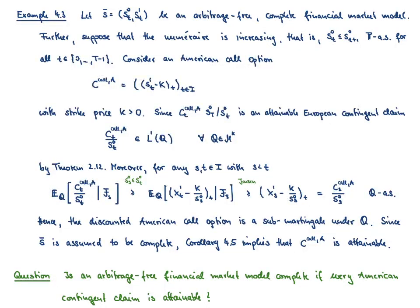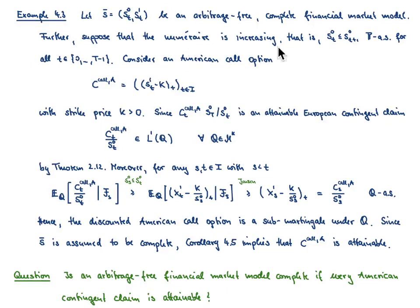I would like to present an example where the discounted American contingent claim is indeed a sub-martingale. For simplicity, I consider a financial market model consisting of the price process of our risk-free security and the price process of one risky security. This model is not only free of arbitrage but also complete. Moreover, I impose on the numeraire the assumption that it is an increasing process, meaning that P-almost surely S⁰_t is bounded from above by S⁰_{t+1} for any time point t in the index set {0, …, T−1}.